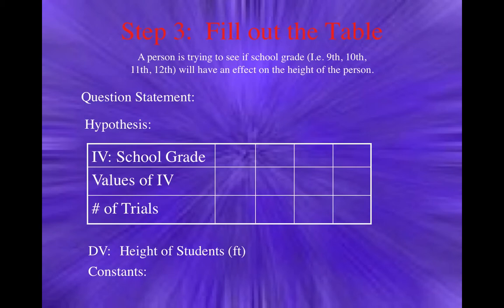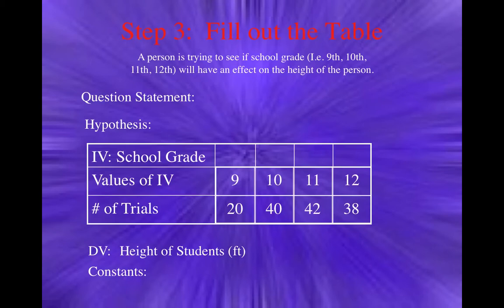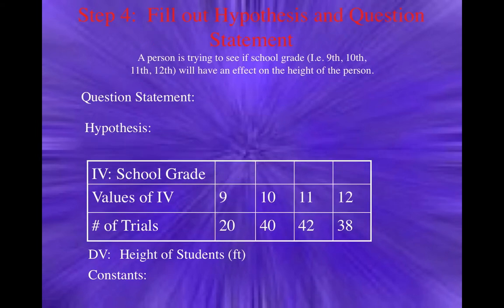Step three, you can fill out the table. What are your values of IV? You're going to look at 9th graders, 10th graders, 11th graders, and 12th graders. The number of trials is probably in this case the number of students you're looking at for each grade — for example, 20 students in 9th grade and 42 in 11th grade. Then fill out the hypothesis and the question statement. The question statement I typically give you; the hypothesis is the answer you think you're going to get.